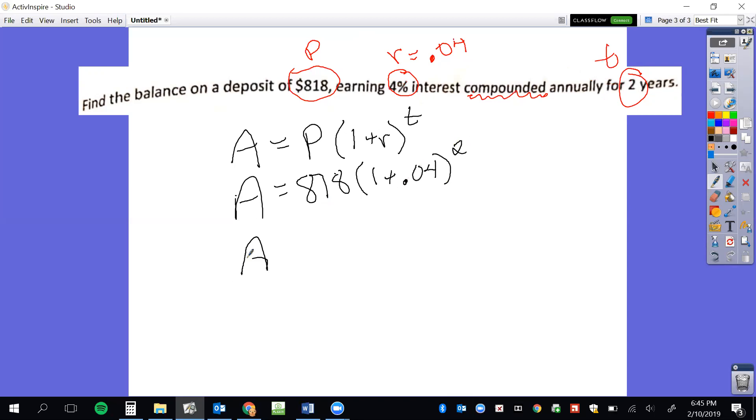Now we need to use PEMDAS or order of operations to solve it, or you can plug it all into your calculator at once. However, if you don't have a calculator, we use order of operations. So 1 plus 0.04 is 1.04 and that is squared. We do parentheses or grouping symbols first. Next, we do exponents, so we have to do this piece next. And if I took 1.04 times 1.04, I get 1.0816.